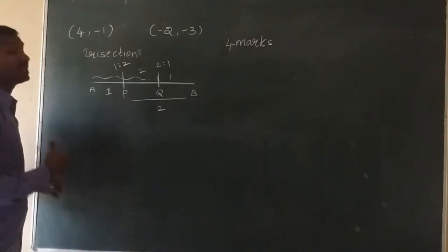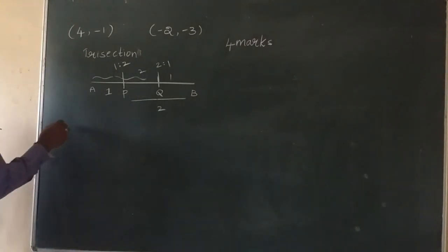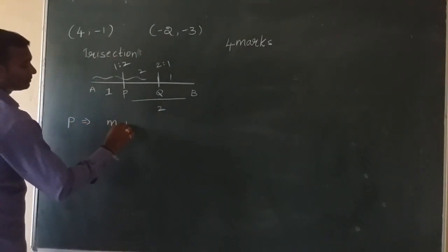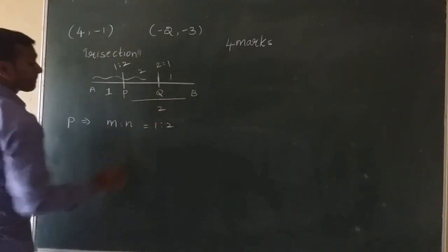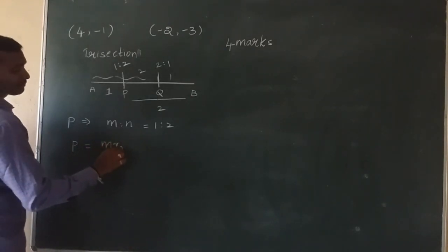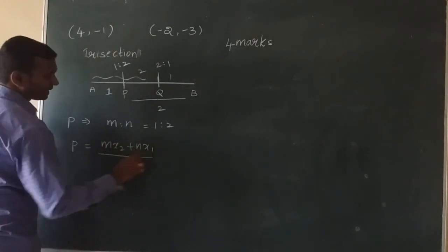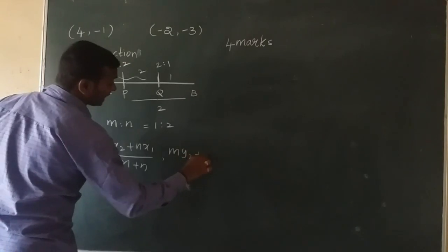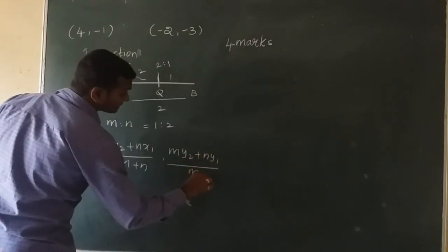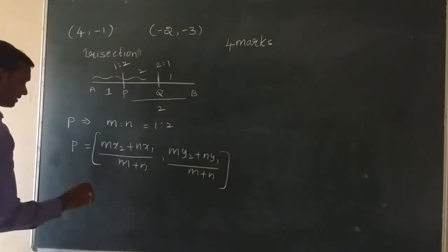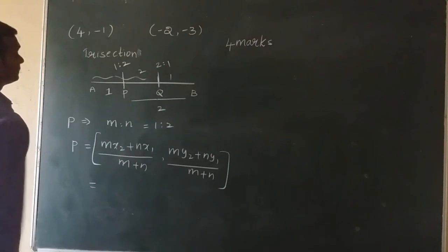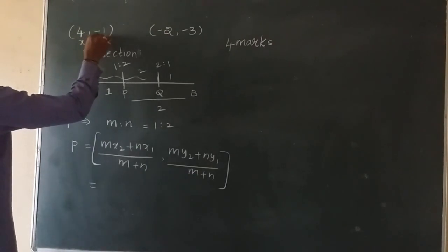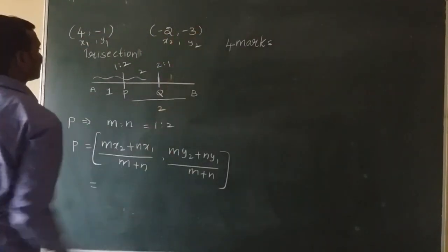To find point P, we apply the section formula for internal division. P divides in the ratio M to N, which is 1 is to 2. The section formula is: x = (M·x2 + N·x1) / (M + N), y = (M·y2 + N·y1) / (M + N). Here x1, y1 and x2, y2 are the coordinates of the endpoints.